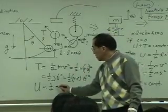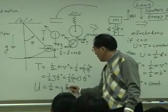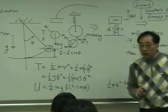Therefore, I can write the potential energy as mg L times 1 minus cosine theta.